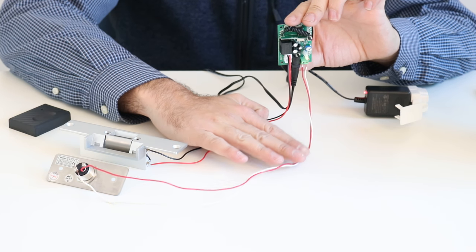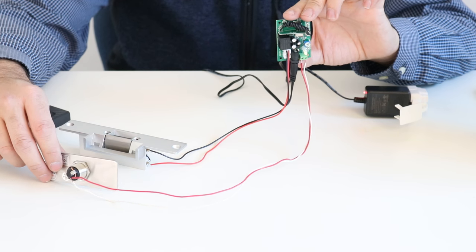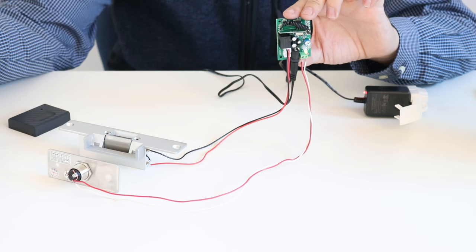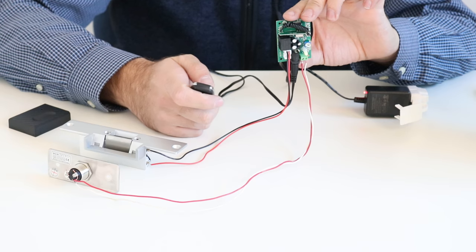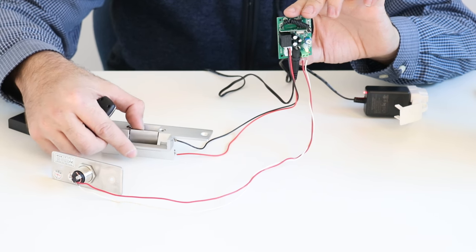Two wires to the electric strike and then two wires here to the exit button. But you don't need the exit button for this to function because we've got this controller right here. So right now you can see that the lock is locked.